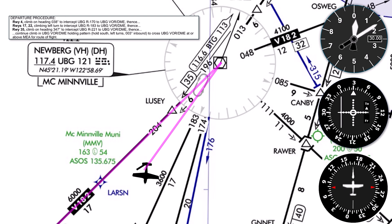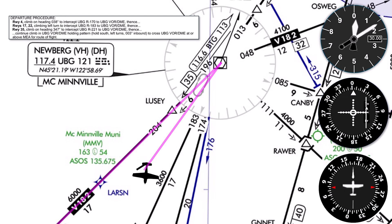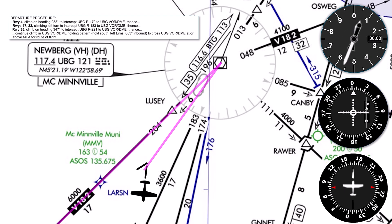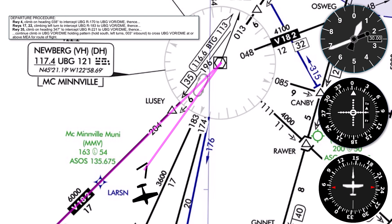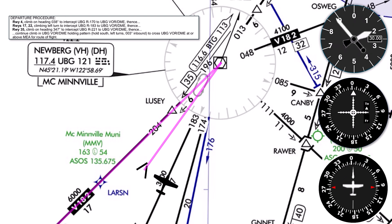Prior to departing, we're going to set the OBS on our VOR tuned to Newburgh on 117.4. We're intercepting the 183 radial, which we're flying inbound along the reciprocal course, which is 003 degrees, so we set that. We take off and make a standard departure, which involves delaying any turns until reaching 400 feet above the departure end of the runway elevation. Passing that altitude, we turn left as instructed in the procedure to intercept the radial inbound as we set it.